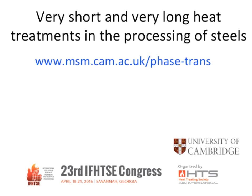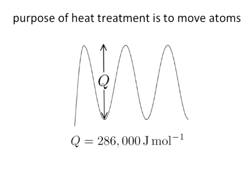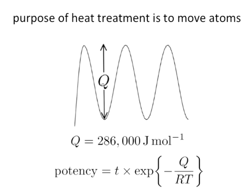Any kind of heat treatment will involve the movement of atoms. In the solid state, atoms have difficulty moving because they lie in equilibrium potential wells separated by an activation barrier. In the case of iron, that activation barrier is quite large — of the order of 286,000 joules per mole of atoms. The atoms vibrate at about 10 to the 13 times per second, so they will attempt to get over this barrier.